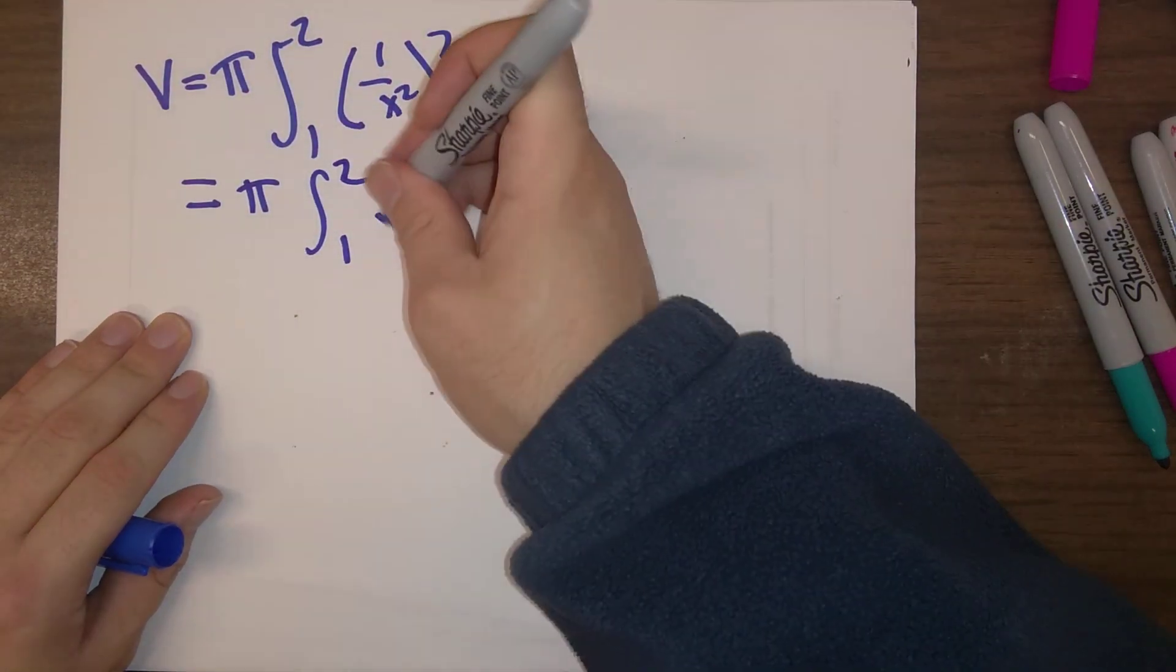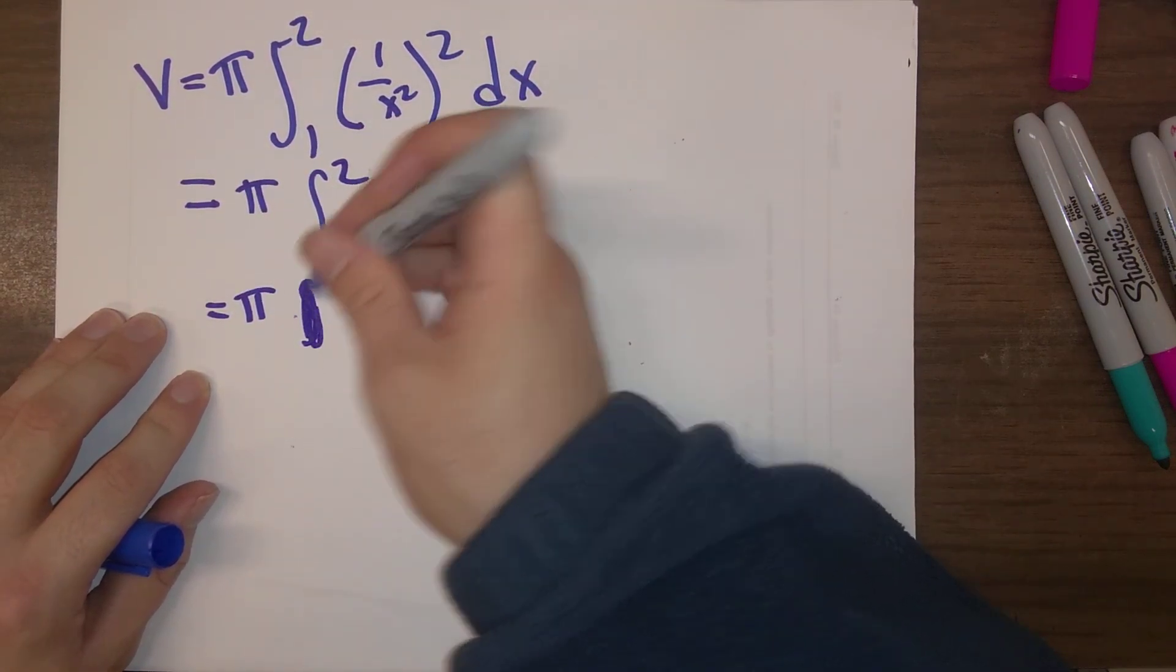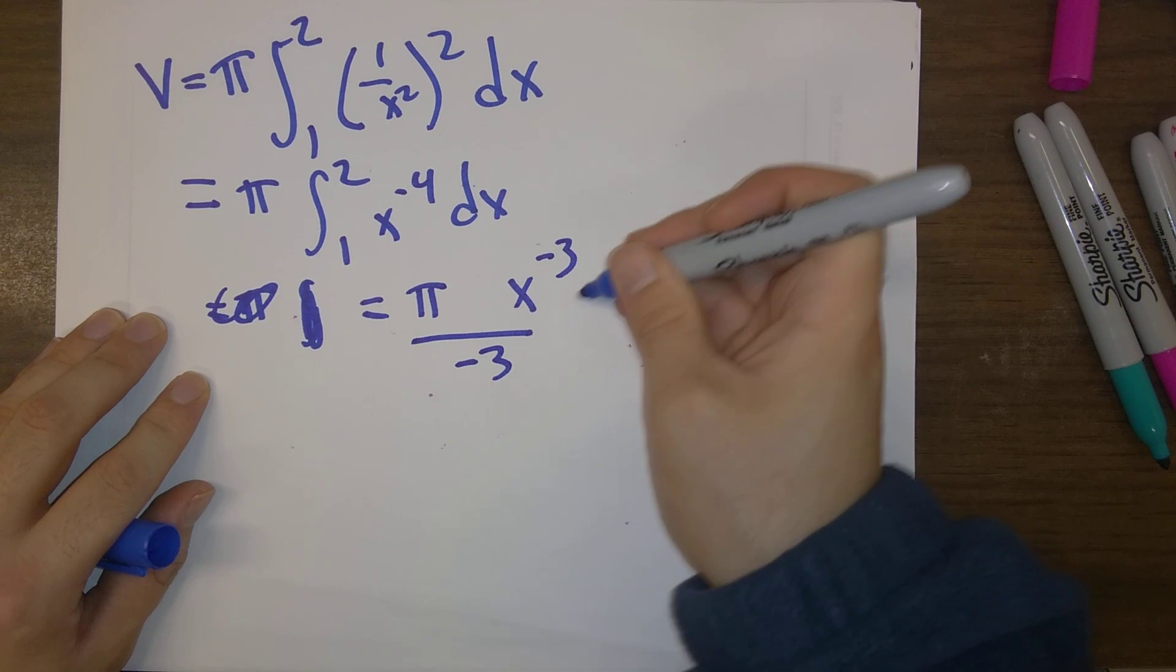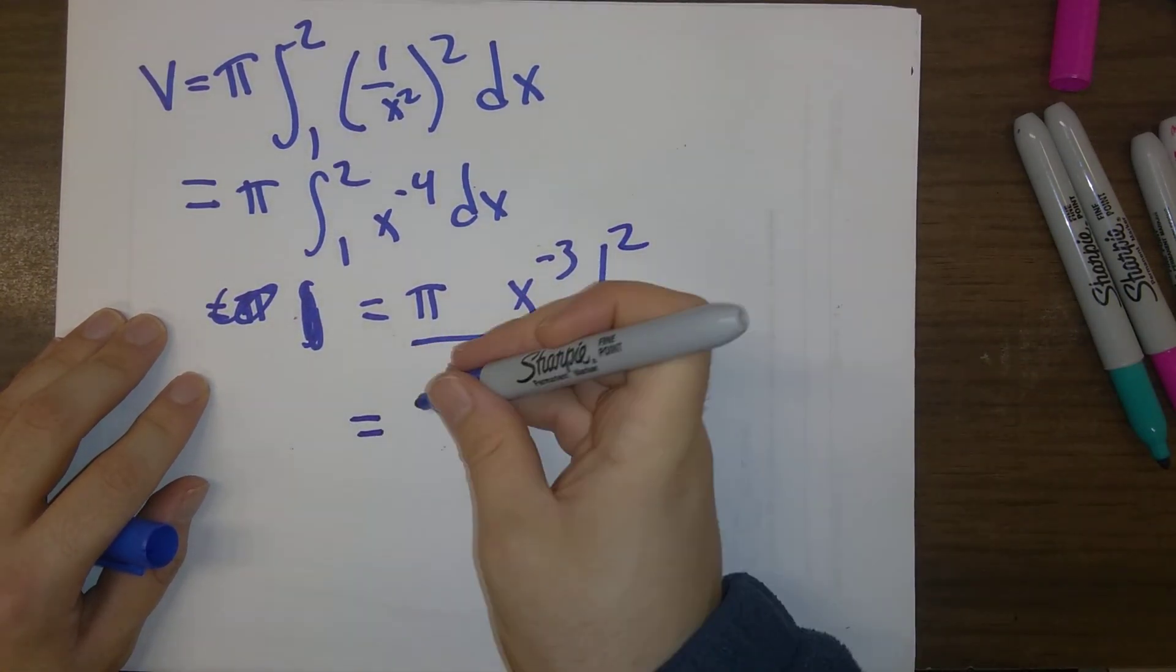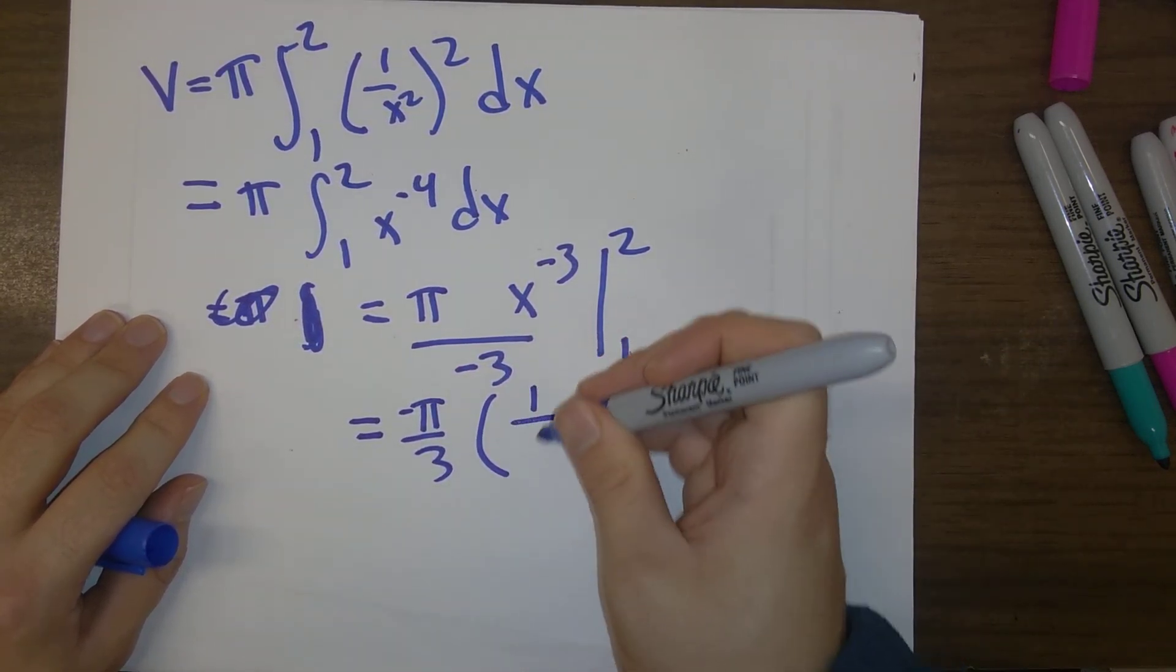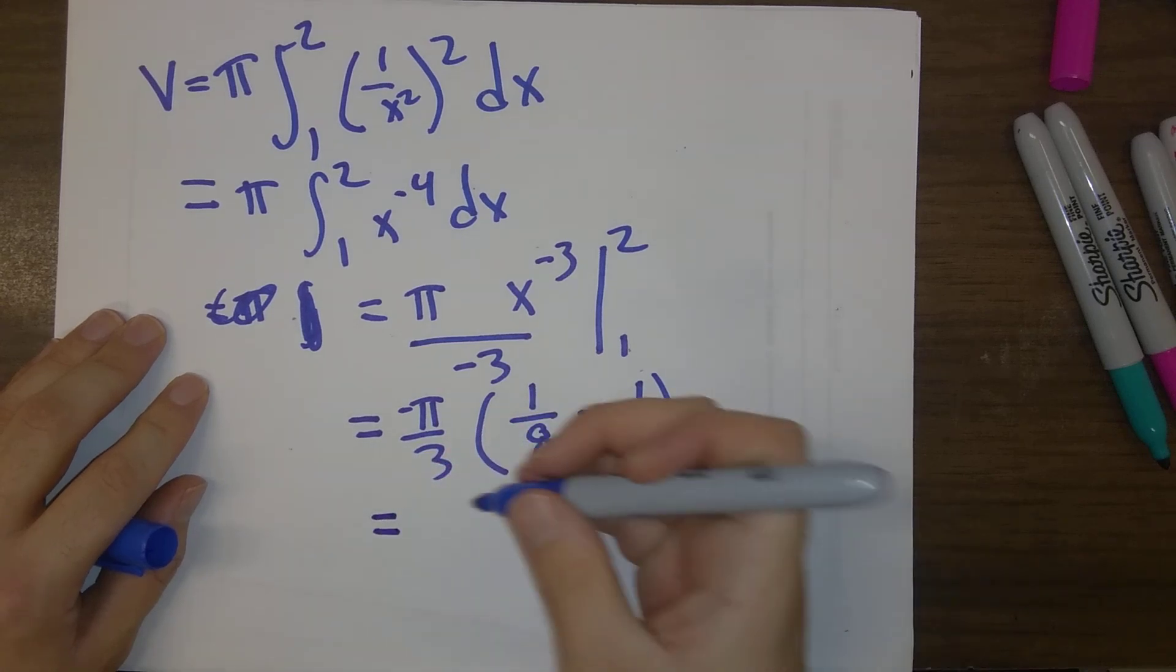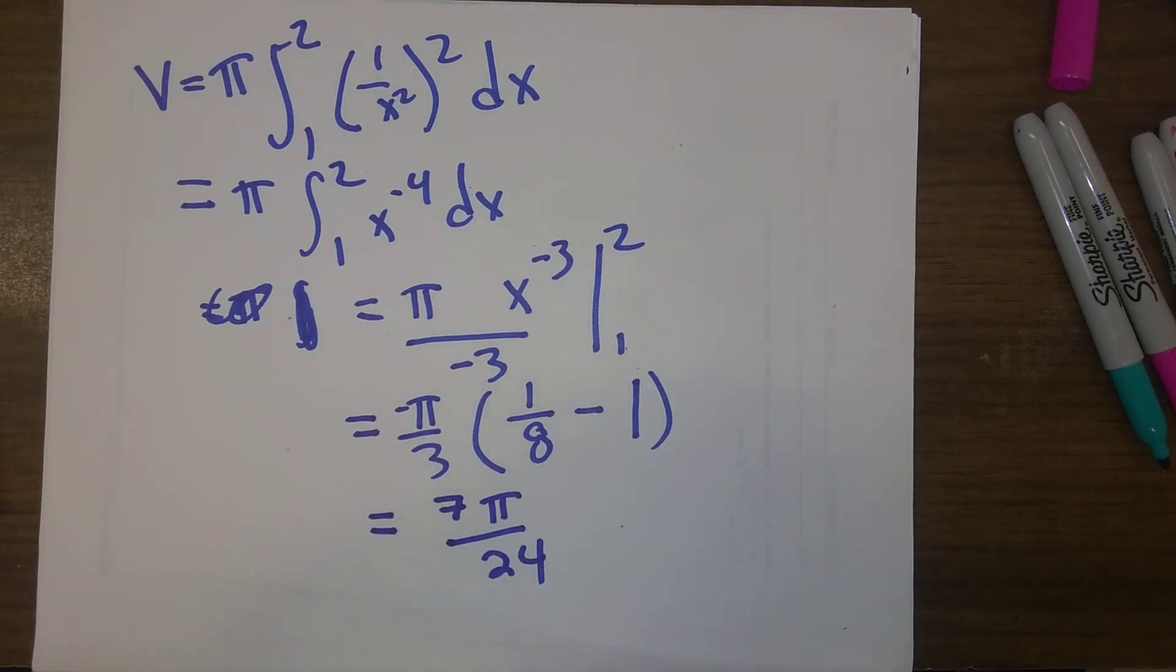1 over x squared, all that squared is x to the minus 4th. The integral of x to the minus 4th, no need for integral sign anymore, is x to the minus 3 and divide by minus 3, and plug in 1 and 2. So it's minus pi over 3 times 1 over 8 minus 1 over 1. And so that is minus 7 eighths. So we end up with 7 pi over 24 as our final answer.